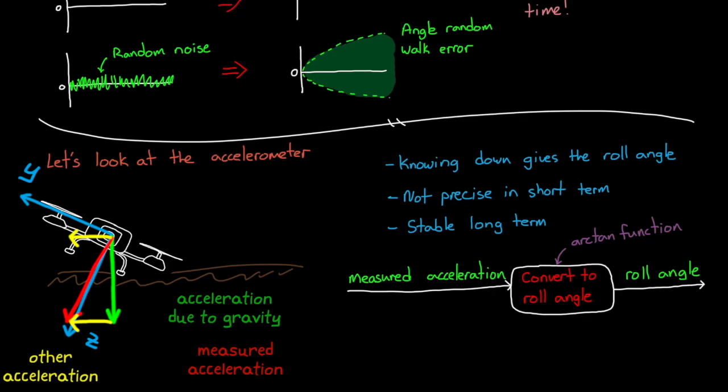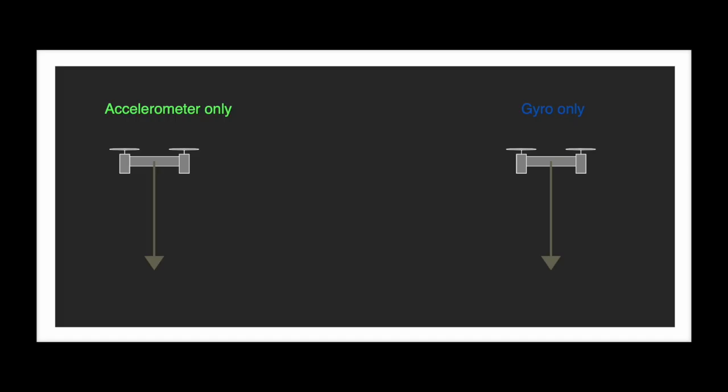So we have two different ways of determining the roll angle. Integrating the gyro, which is more accurate over the short term, and measuring the acceleration, which is more accurate over the long term. To let you visualize these two methods, I created a simple JavaScript program that uses a noisy accelerometer and a noisy gyro to show you the direction the drone thinks is down with either method.